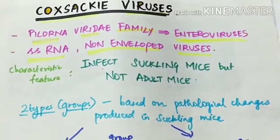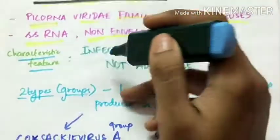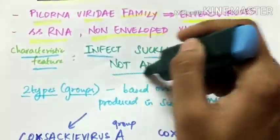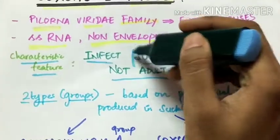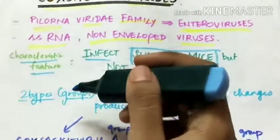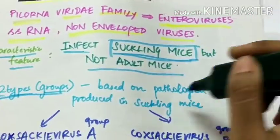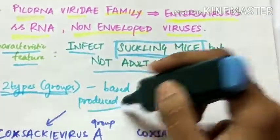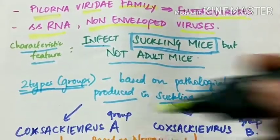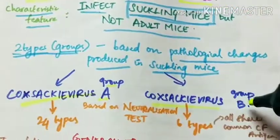The characteristic feature of the Coxsackie viruses is that they infect only the suckling mice but not the adult mice. There are two groups of Coxsackie viruses based on the pathological changes produced in the suckling mice: Coxsackie group A and Coxsackie virus group B.